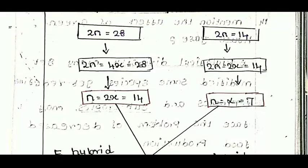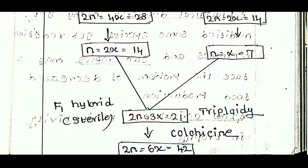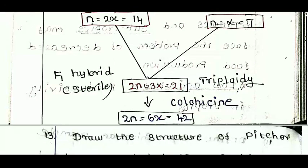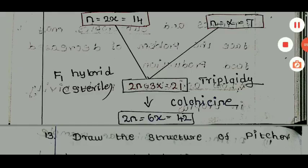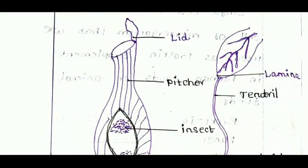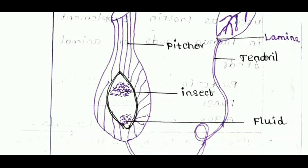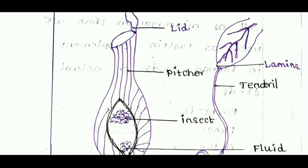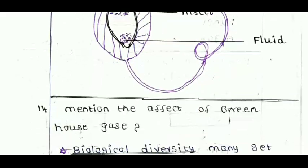Triticale hexaploid derivation: Triticum durum 2n = 4x = 28; Secale cereale 2n = 2x = 14; 2n = 2x = 14; n = 7. Adding the chromosome numbers: 2n = 3x = 21 (triploid). Adding colchicine: 2n = 6x = 42 (hexaploid). Draw the structure of pitcher plant and label the parts — lid (modified leaf), hood, pitcher inside, insect trap, lamina, tendril, fluid glands.